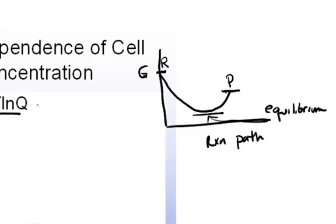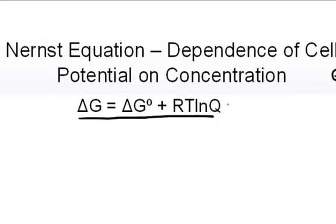That's the relationship that is shown here in this particular equation. Well, since we have a relationship between the standard Gibbs free energy and the standard cell potential at standard conditions, which was negative nF times the standard cell potential.